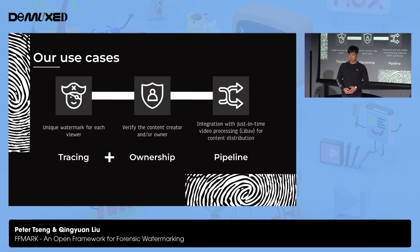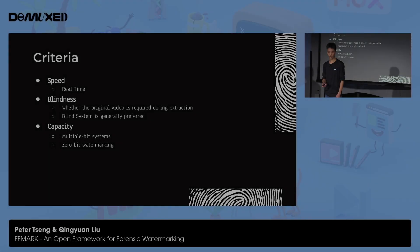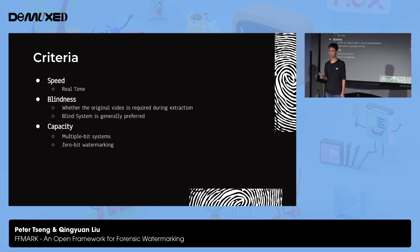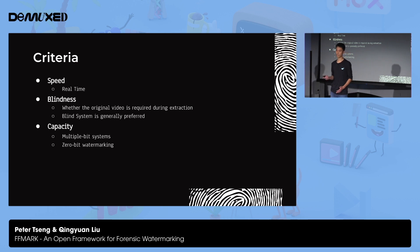My colleague will now talk about some of his research on forensic watermarking. Let's take a look at the criteria of forensic video watermarking. First, we care about speed — how fast we can watermark our video, and whether we can do it in real time. The second criterion is blindness: whether the original video is required during extraction. Generally, a blind system is preferred because it doesn't require the original video for extraction. The third criterion is capacity — the capacity of the payload we embed into our video.